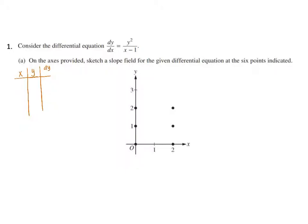We're going to look at dy/dx at a given ordered pair. So the first one is (0, 0). If I substitute in (0, 0) into our given derivative, then we're going to have 0 over negative 1, which is 0. So I'm going to sketch a segment that would depict a slope of 0 through that coordinate.